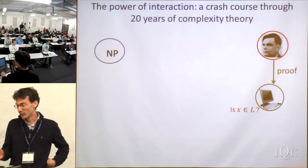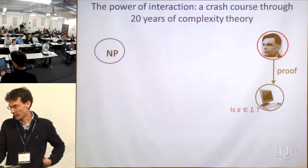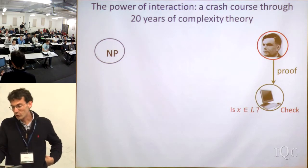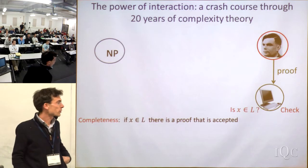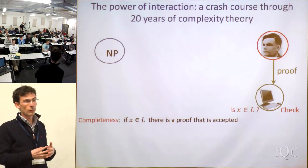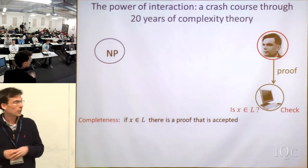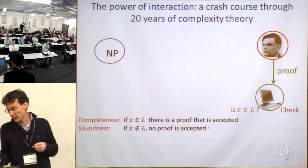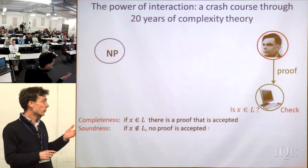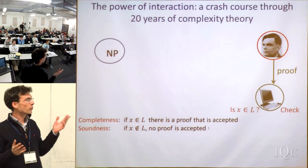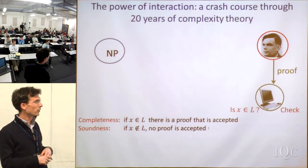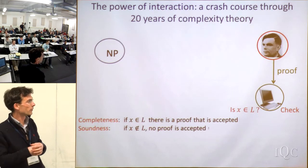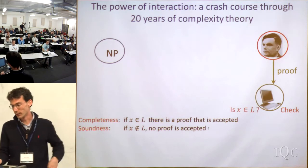Think of the language as being 3SAT — the input is a formula and you want to decide whether it's satisfiable. The prover can provide a proof, such as an assignment to the variables, and the verifier checks and decides to accept or reject. There are two important properties: completeness — if the input is in the language, there should be a proof accepted by the proof system — and soundness — if the input is not in the language, whatever the prover tells the verifier, the verifier will reject.